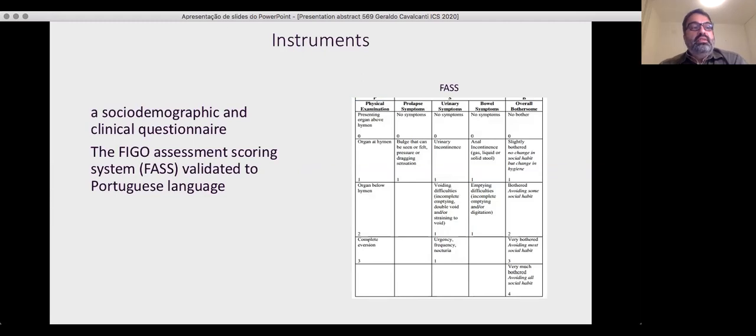For this study, we used a sociodemographic questionnaire and the FAS, the FIGO Assessment Scoring System, a validated instrument to Portuguese language, which prolapse urinary and bowel symptoms were obtained, as well as prolapse staging by physical examination.